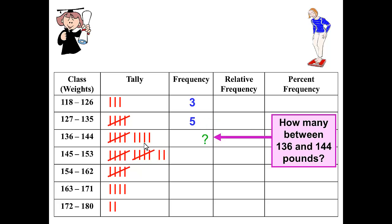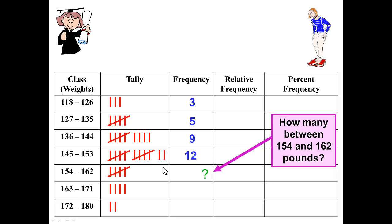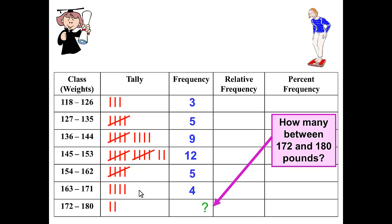Between 136 and 144 we have five, six, seven, eight, nine. Between 145 and 153, counting by fives: five plus ten, plus two more makes twelve. Between 154 and 162 we have five, between 163 and 171 we have four, and in our last class between 172 and 180 we have two.